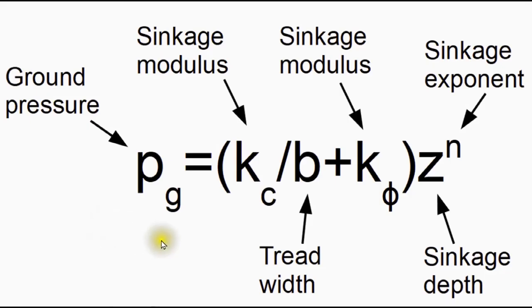Expanding the equation, we've got the ground pressure here, and it's given by this equation on the right. Here we've got the sinkage depth, which is raised to an exponent n, and inside the bracket we've got Kc, which is the sinkage modulus, divided by B, which is the loaded width, plus Kphi, which is another sinkage modulus. And these three items here are all soil properties.